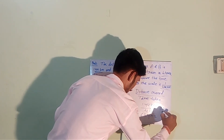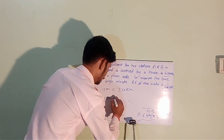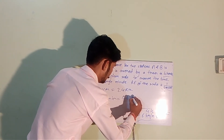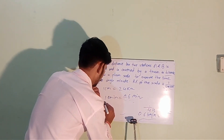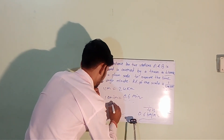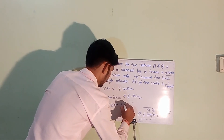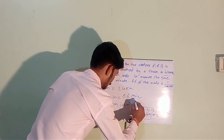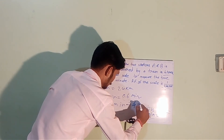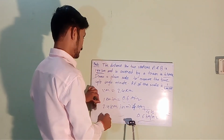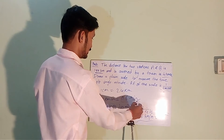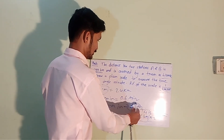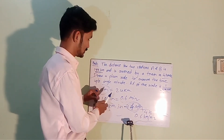At 36 kilometers per hour, the train covers 0.6 kilometers per minute. Therefore, 2.4 kilometers is covered in 4 minutes. Since 1 centimeter on the scale represents 2.4 kilometers, it means 1 centimeter represents 4 minutes.